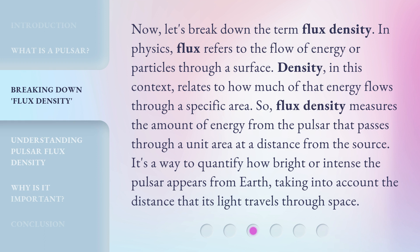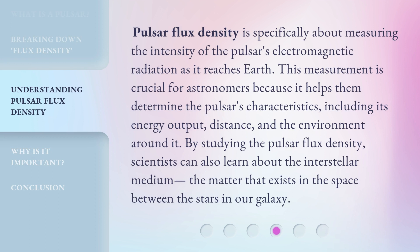It's a way to quantify how bright or intense the pulsar appears from Earth, taking into account the distance that its light travels through space. Pulsar flux density is specifically about measuring the intensity of the pulsar's electromagnetic radiation as it reaches Earth. This measurement is crucial for astronomers because it helps them determine the pulsar's characteristics, including its energy output, distance, and the environment around it. By studying the pulsar flux density, scientists can also learn about the interstellar medium, the matter that exists in the space between the stars in our galaxy.